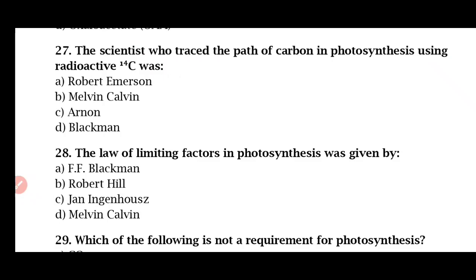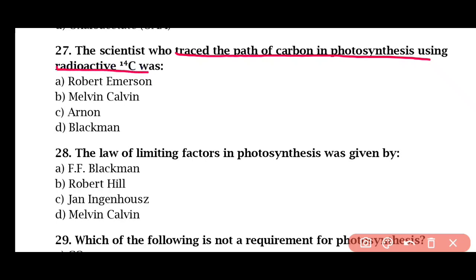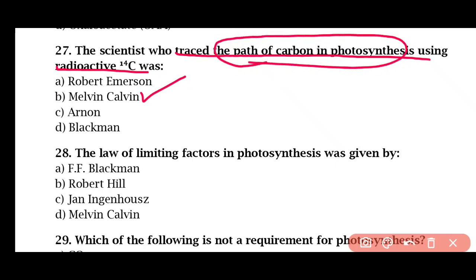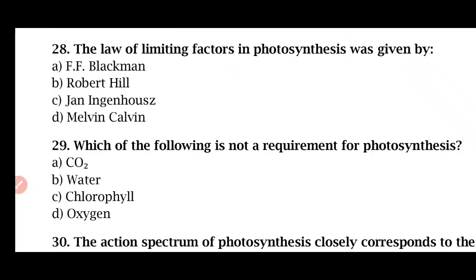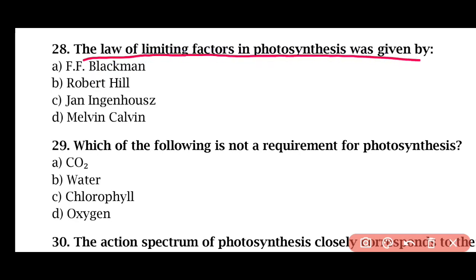Question 27: The scientist who traced the path of carbon in photosynthesis using radioactive carbon-14 isotope was — Robert Emerson, Melvin Calvin, or Arnon/Blackman. Question 28: The law of limiting factors in photosynthesis was given by — Blackman, Robert Hill, John Ingenhouse, or Melvin Calvin. The correct answer is Blackman.